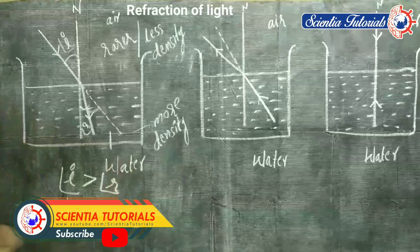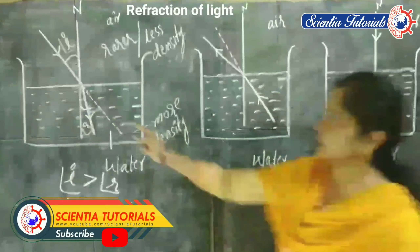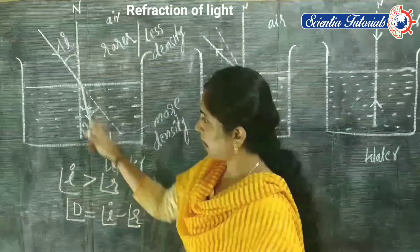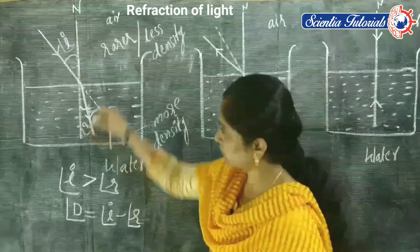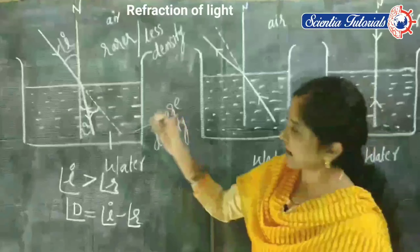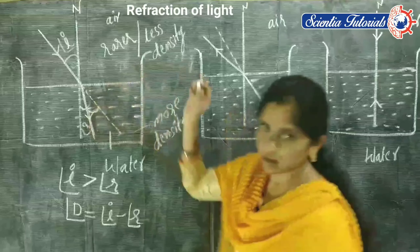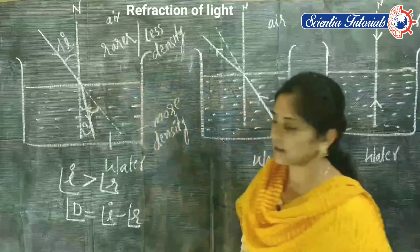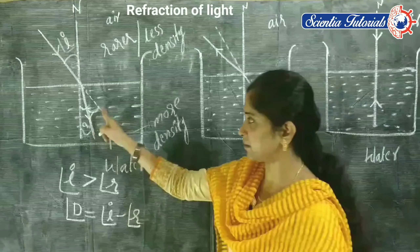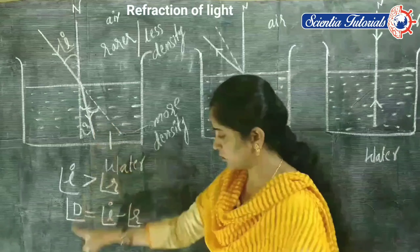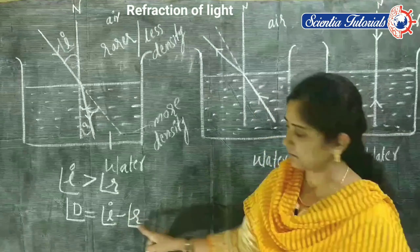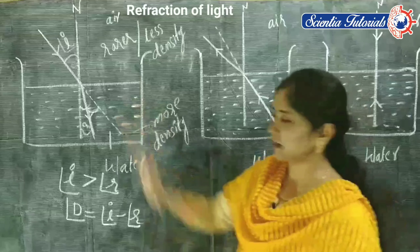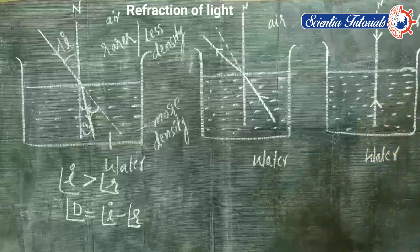By observing this diagram, we can say that angle of incidence is greater than angle of refraction. The angle of deviation is the angle between the actual path of the light ray and the refracted ray. So angle D equals angle I minus angle R — that is, angle of incidence minus angle of refraction. This is the first condition.